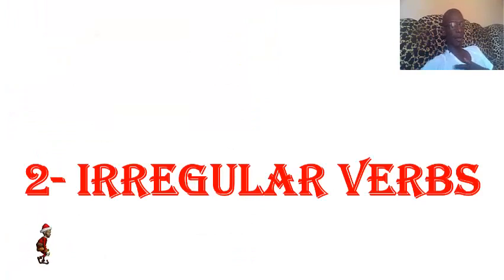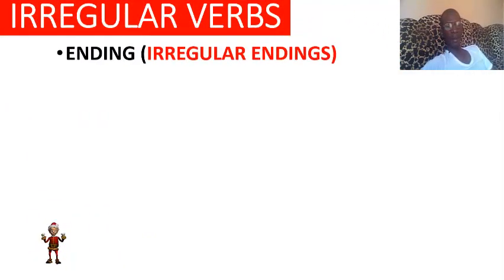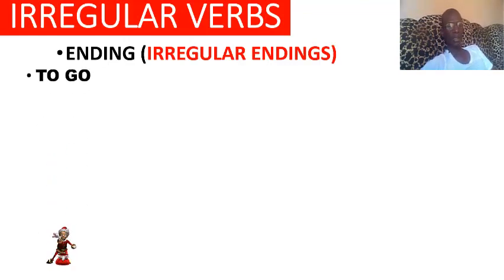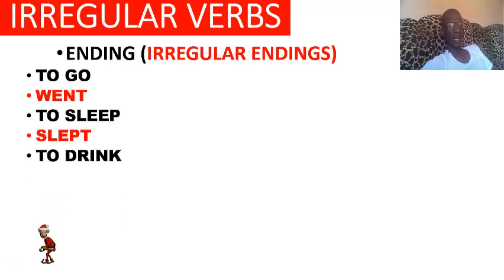Maintenant, les verbes irréguliers. Comme son nom l'indique, ce sont des verbes qui ont une terminaison irrégulière. Et comme la terminaison est irrégulière, il faut apprendre les verbes irréguliers par cœur — they have an irregular ending, you have to learn them by rote. For example, to go → went (aller, partir), to sleep → slept (dormir), to drink → drunk (boire).